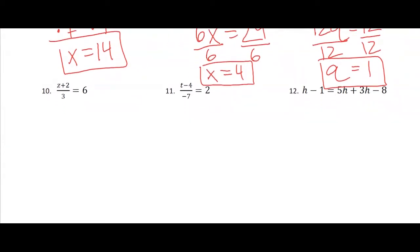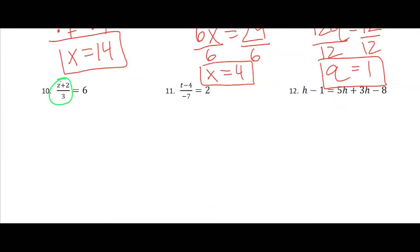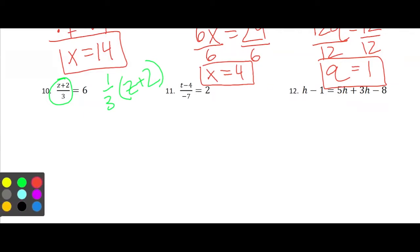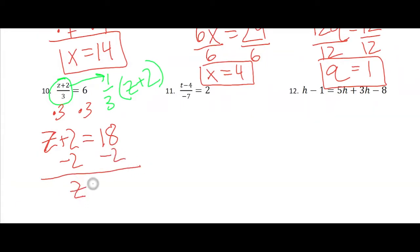Number 10 is a little different. What you really have here is 1/3 times (z plus 2). There are two ways to handle this: multiply both sides by 3, divide both sides by 1/3, or distribute. The best approach is to multiply both sides by 3, so the 1/3 times 3 equals 1, and we're left with z plus 2 equals 18. Subtract 2, and I get z equals 16.